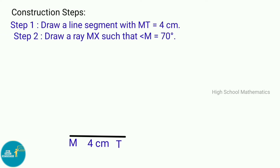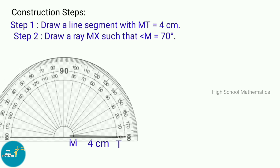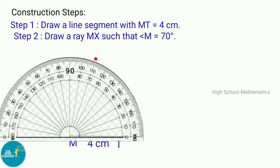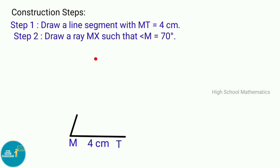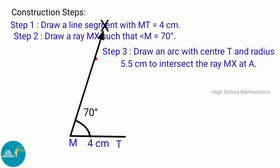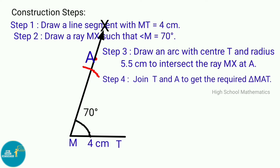Step 2: Draw a ray MX such that angle M equals 70 degrees. Step 3: Draw an arc with center T and radius 5.5 centimeters to intersect ray MX at A. Step 4: Join T and A to get the required triangle MAT.